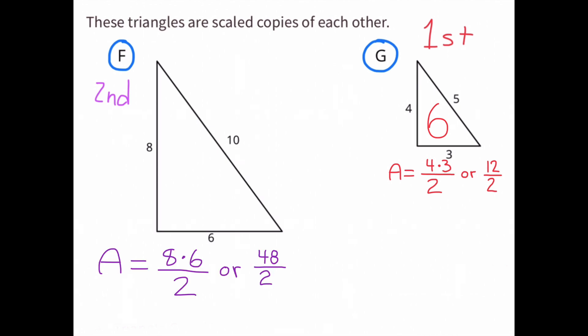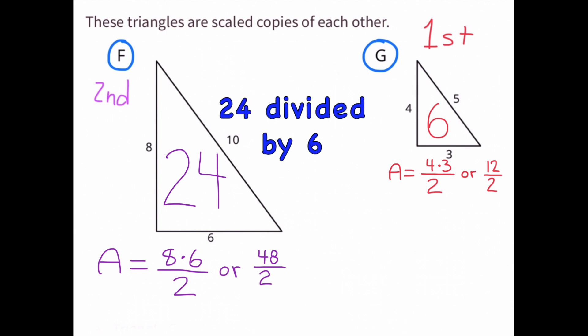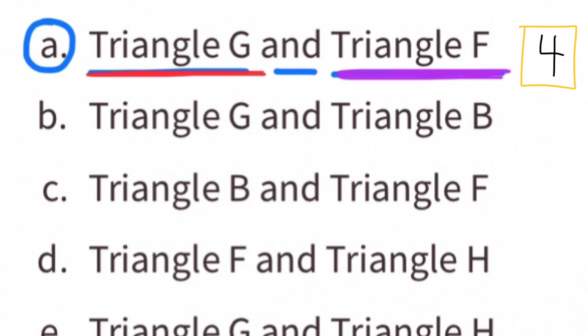The area for triangle F is half of 8 times 6, or half of 48, which is 24. So the area of triangle F is 24 square units. To figure out how many times larger the area of triangle F is compared to triangle G, we divide 24 by 6, which equals 4. The area of triangle F is 4 times the size of the area of triangle G.